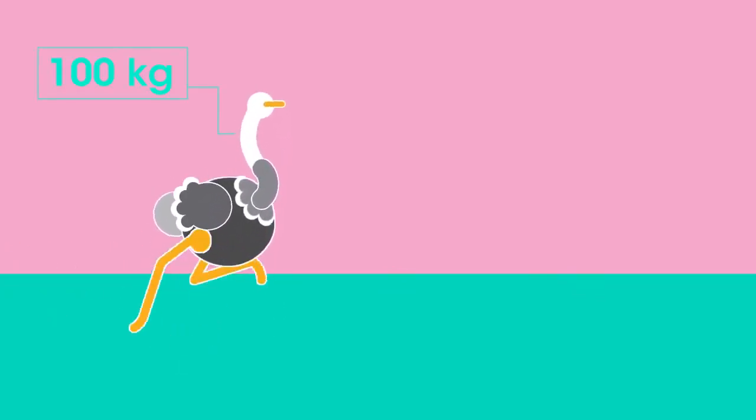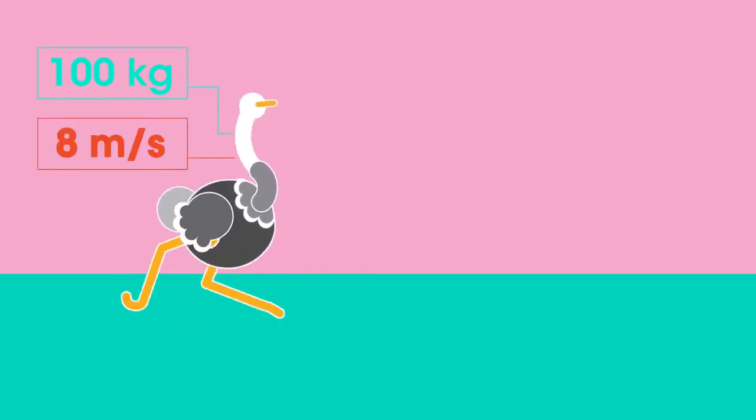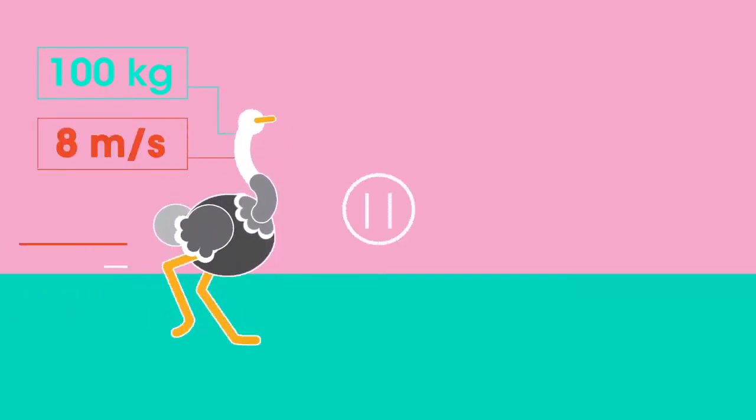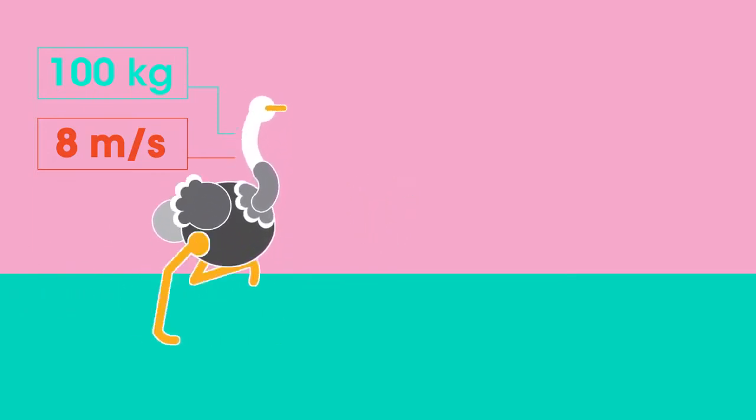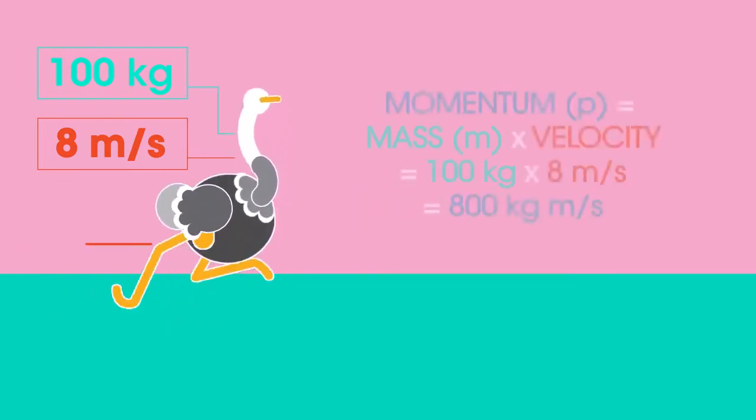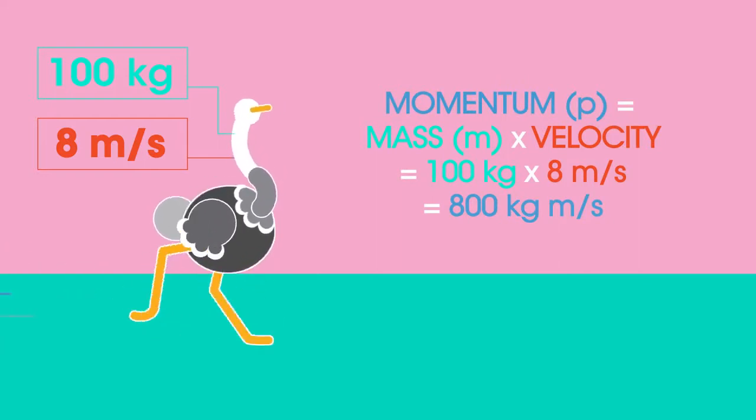Now try this example. What is the momentum of a 100 kilogram ostrich traveling at 8 meters per second? Pause the video while you work it out. How did you do?